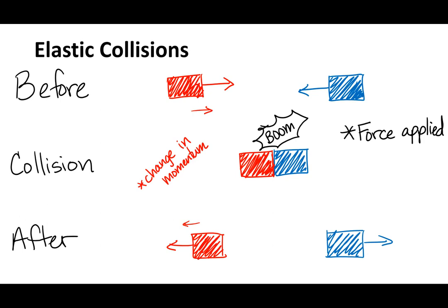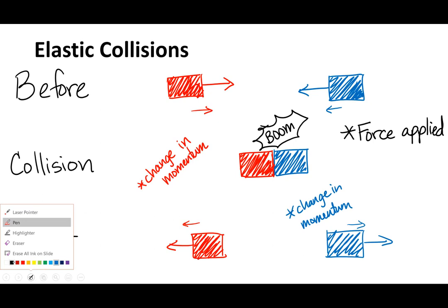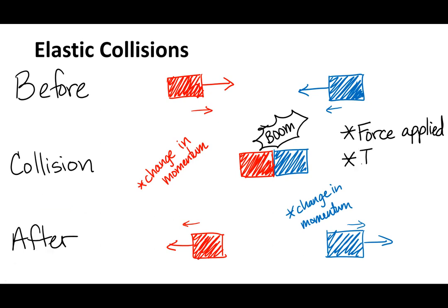The blue object is initially going to the left, and then after the collision it is going to the right, so it also experiences a change in momentum. Change in momentum is the definition of impulse. There is an impulse whenever two objects collide — in the case of the red one it changes direction, and in the case of the blue one it also changes direction.